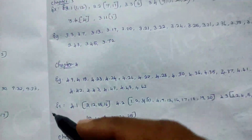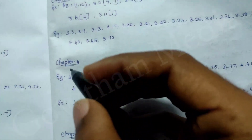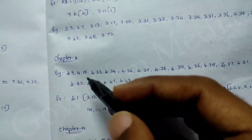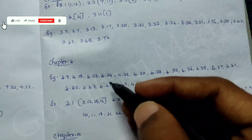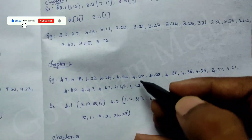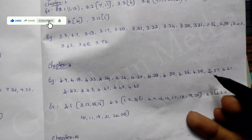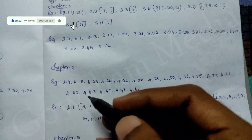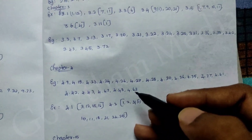Chapter 4 is not edited, so let's share it with you. So: 4.9, 4.18, 4.23, 4.24, 4.26, 4.27, 4.28, 4.30, 4.36, 4.35, 4.37, 4.41, 4.42, 4.43, 4.47, 4.48, 4.62.